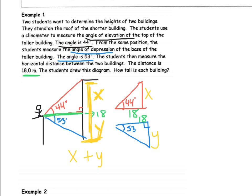So in my first equation, I have tangent 44 degrees equals x over 18. So 18 times tangent 44. Tangent 44 is 0.966. And then we multiply by 18 on both sides. And I get 17.4.